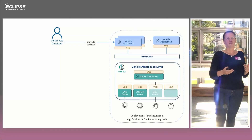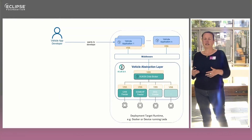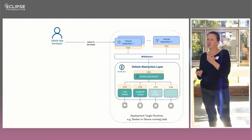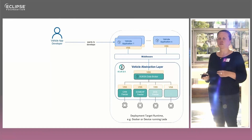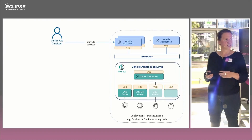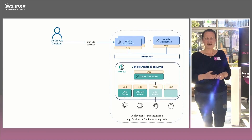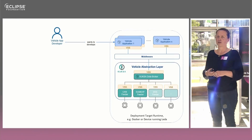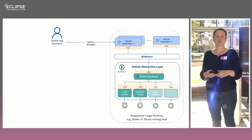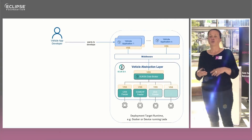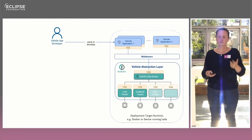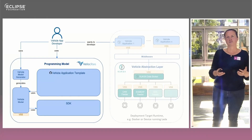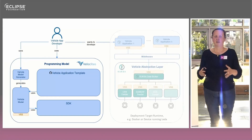Basically, imagine you would like to develop a vehicle application that, for example, subscribes to specific data points that you would like to receive, or you would like to change by using the concept of the vehicle data broker from Kuksa. We heard today the great presentation from Sven, which presented how the data broker works and also the collaboration with the VSS specification. So if you would like to develop such an application, then you can use Eclipse Velocitas. Eclipse Velocitas is basically a programming model that helps you in an easy manner to develop such an application.